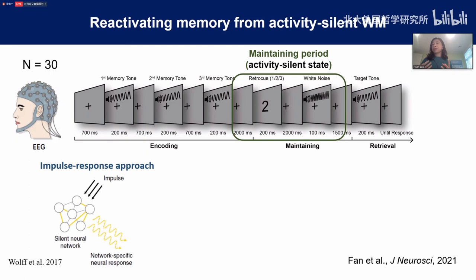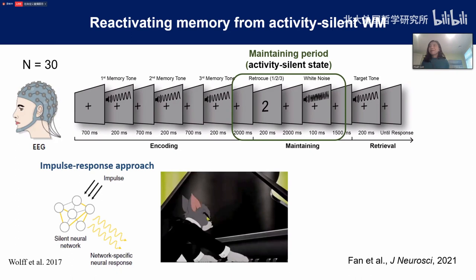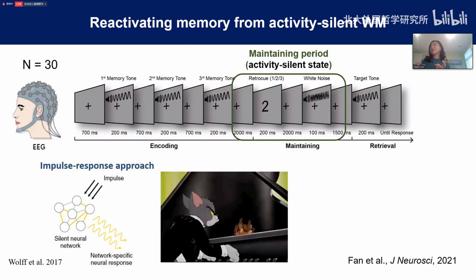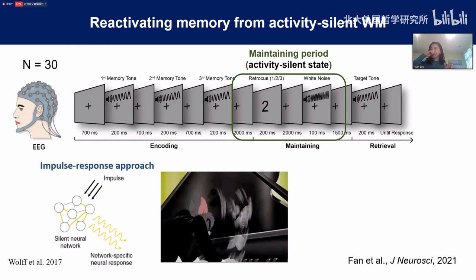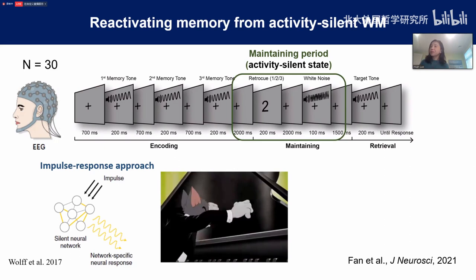To illustrate this idea, I found a Tom and Jerry example. Think of the piano as the working memory system, silently holding Jerry as the hidden information. You don't know whether Jerry is there. So what Tom can do is give a huge punch to the piano — that's like an impulse. Jerry, hidden inside, will be reactivated. That's the idea of the impulse response approach. If Jerry is not hidden there, even a huge punch cannot reactivate anything.